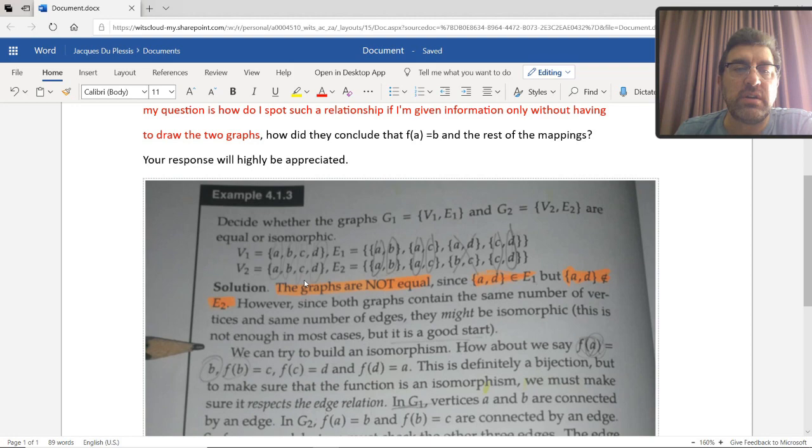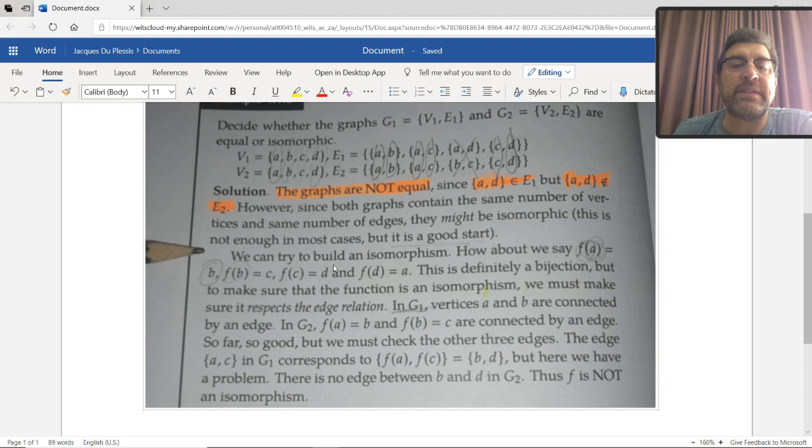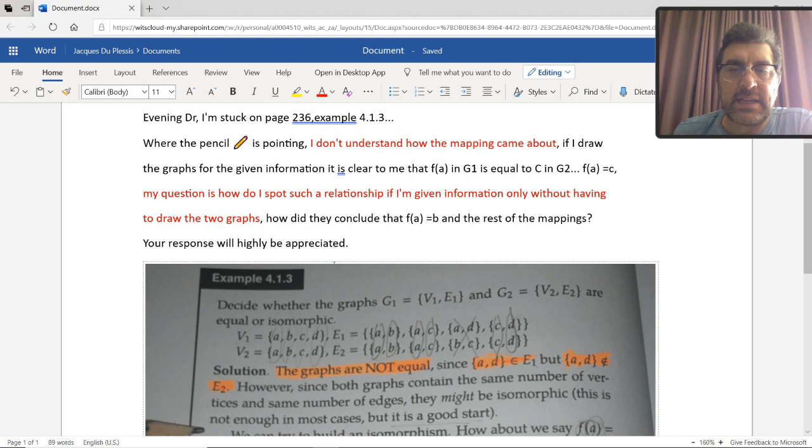His query is as follows. It says where the pencil is pointing. Now he sent us a screenshot. We'll go to example 4.1.3 in a second, but his pencil is pointing to f of a is b, f of b is c, and that's his main query. Now I'm going to deal with more than just that, just to reinforce your understanding.